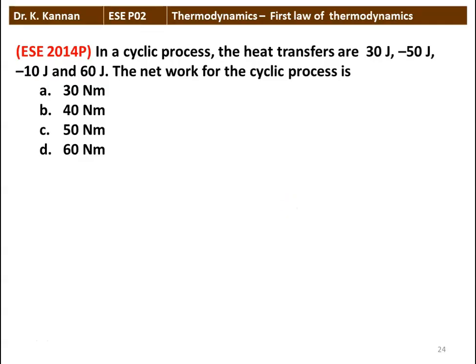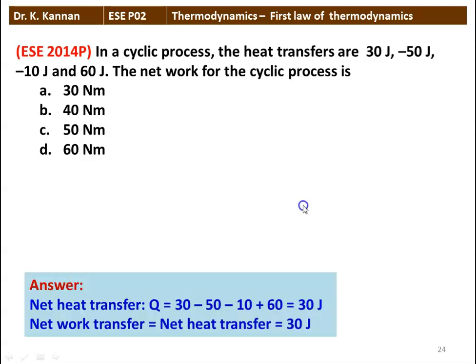The first question: in a cyclic process, the heat transfers are 30 joules, minus 50 joules, minus 10 joules and 60 joules. The net work for the cyclic process is — there are 4 options given: 30 newton metre, 40 newton metre, 50 newton metre and 60 newton metre.